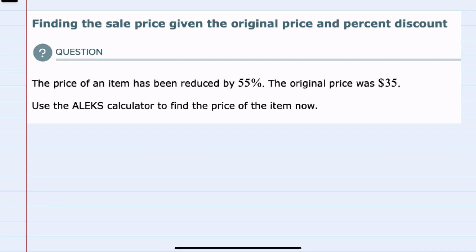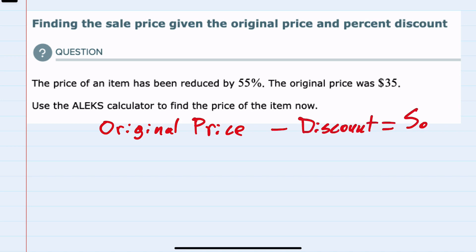In this video, I'll be helping you with the ALEKS problem type called finding the sale price given the original price and percent discount. The relationship for a sale price item is that you start with the original price, subtract the discount, and you have the sale price.